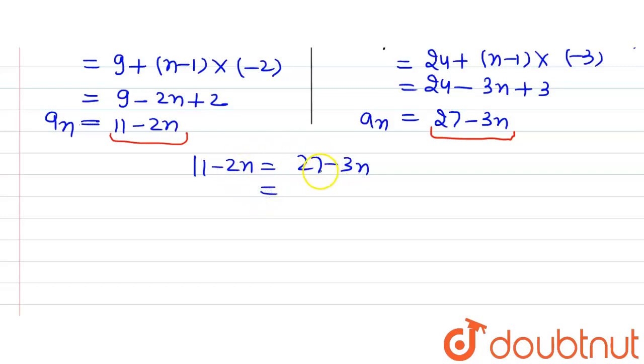Moving -3n to the left side, it becomes +3n, giving us 3n - 2n. Moving +11 to the right side, it becomes -11. So 27 - 11 = 16, and 3n - 2n = n. Therefore, n = 16.